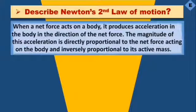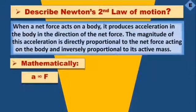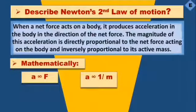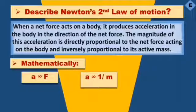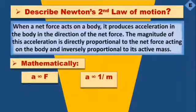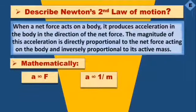The magnitude of this acceleration is directly proportional to the net force applied, and inversely proportional to the mass of the body. Directly proportional means if one thing increases, the other also increases — so if acceleration is more, force is more. Inversely proportional means if one thing increases, the other decreases — so if mass is more, acceleration is less, and vice versa.